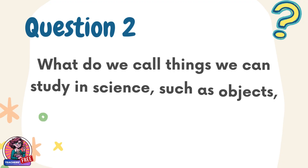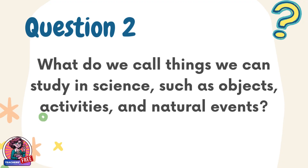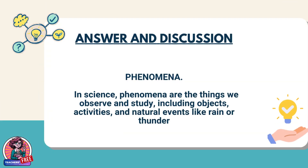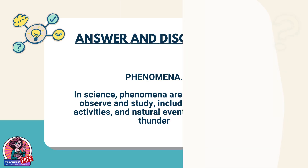Question 2. What do we call things we can study in science, such as objects, activities, and natural events? Answer: Phenomena. In science, phenomena are the things we observe and study, including objects, activities, and natural events like rain or thunder.